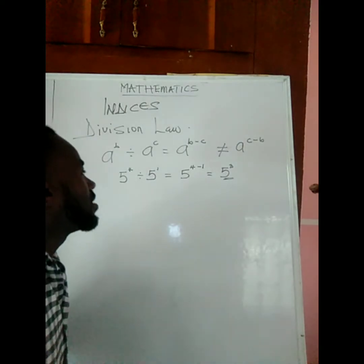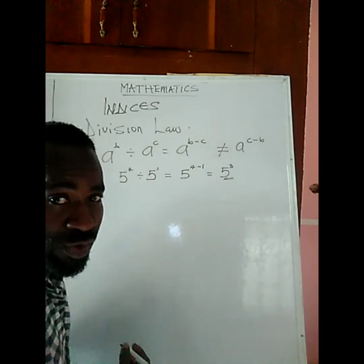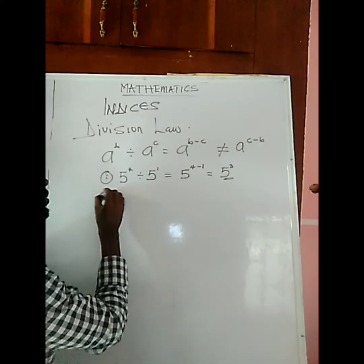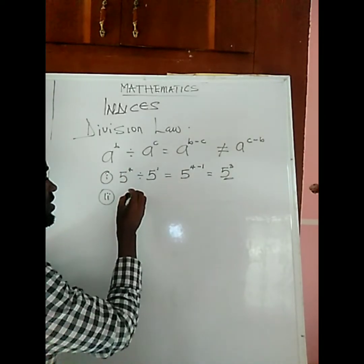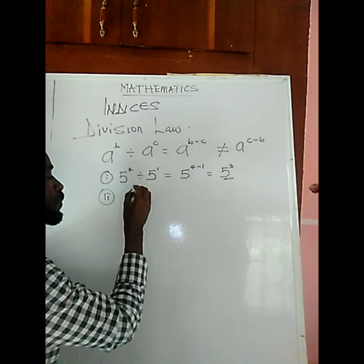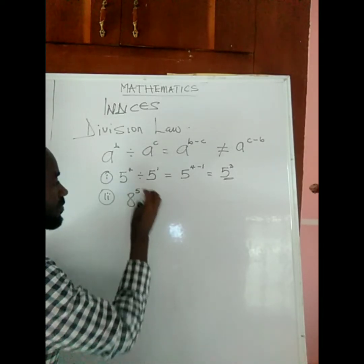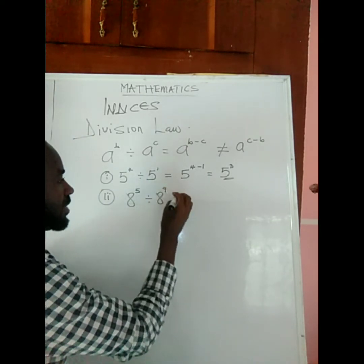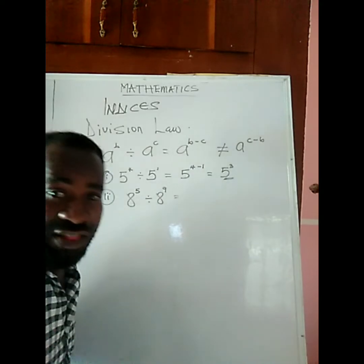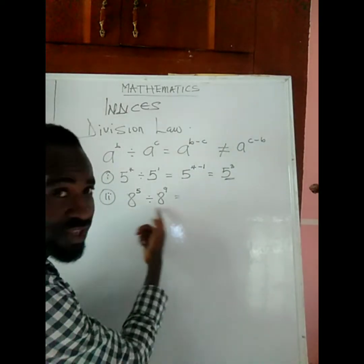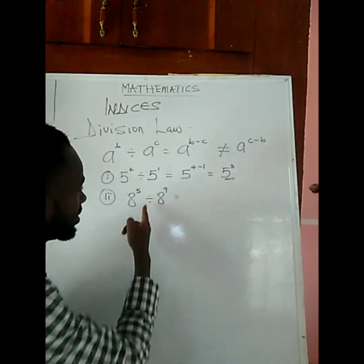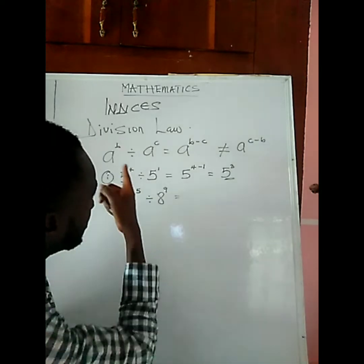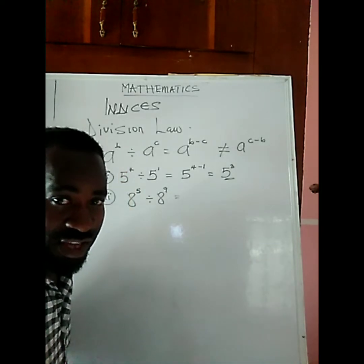Let me call this example 2. Let's say you are given 8 to the power of 5 divided by 8 to the power of 9. Let's check this out. Are the bases the same? Yes. Is the sign at the middle division? Yes. Can we apply the division law? Yes.